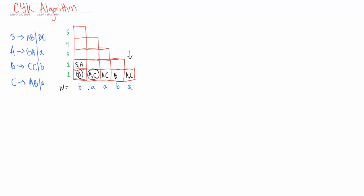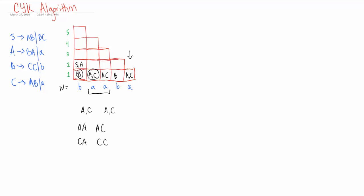Now we look at A and A. We do the Cartesian product of A and C with A and C, so we end up with AA, AC, CA, and CC. Where do we get AA? We don't. AC? We don't. CA? We don't. CC? We get it in state capital B. So we put capital B up here.